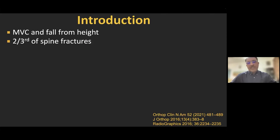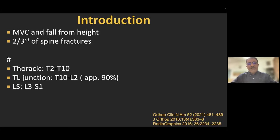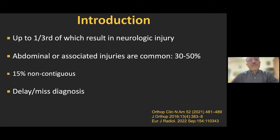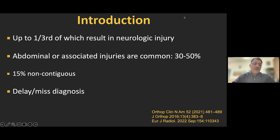Motor vehicle collision and fall from height are the commonest mechanisms for thoracolumbar spine trauma, and almost two-thirds of spine fractures occur in this region. Among the thoracic and lumbar region, T2 to T10 is a relatively uncommon fracture site. Majority of fractures occur between T10 and L2, because this thoracolumbar junction is a biomechanically transitional zone susceptible to fractures. Lumbar-sacral spine is relatively less commonly involved. These fractures are important because up to one-third result in neurologic injury, at least 30% are associated with abdominal or other injuries, and 15% are non-contiguous fractures. Quite often these fractures are delayed in diagnosis or missed completely.